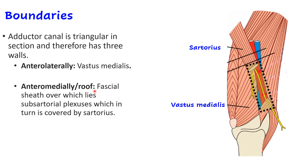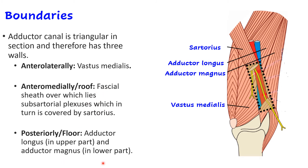In the cross-section these three structures become very clear. Posteriorly — the floor — is formed by two muscles: adductor longus and adductor magnus.